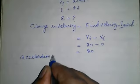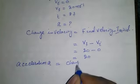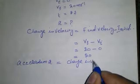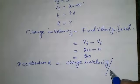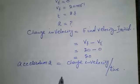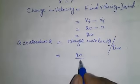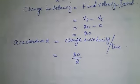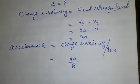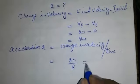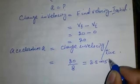The acceleration a is equal to change in velocity divided by time, which equals 20 over 8. 20 divided by 8 equals 2.5 meters per second squared.